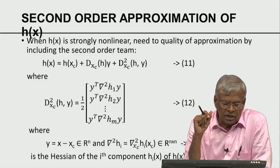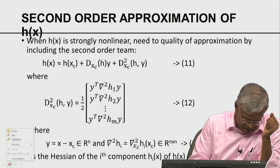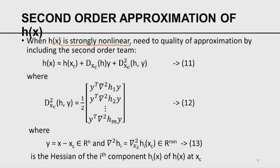Thus far we saw the first order approximation. Now, if the function H of X is strongly nonlinear — involving logarithmic, exponential, trigonometric functions, or fractional powers — the linear approximation has many errors. For example, in satellite meteorology, energy radiated equals alpha times T to the power 4, which is very strongly nonlinear. In this case the linear approximation will not be very useful and we need to go from first order to second order terms to improve the quality of the approximation.